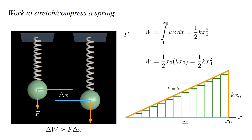This idea of approximating the area of a curve by the sum of the areas of small rectangles is the basis for integral calculus. We write that w equals the integral from zero to x₀ of kx dx, equals one-half k x₀².